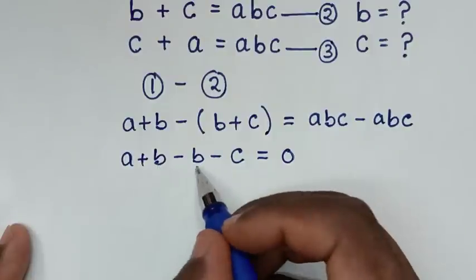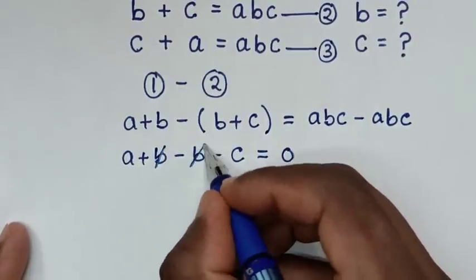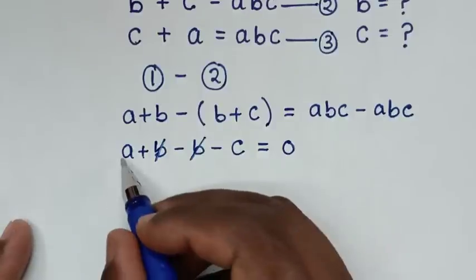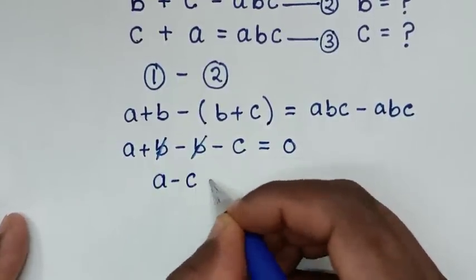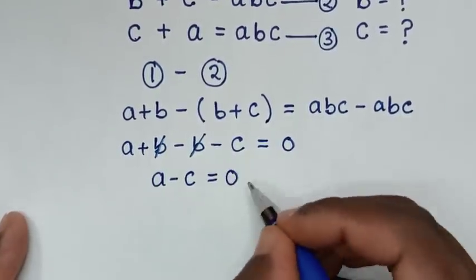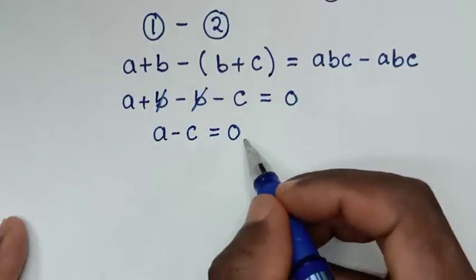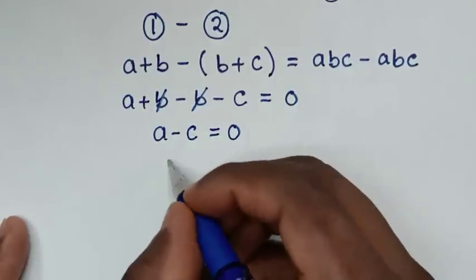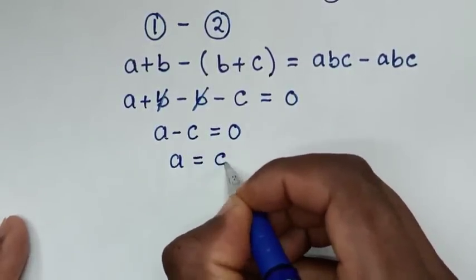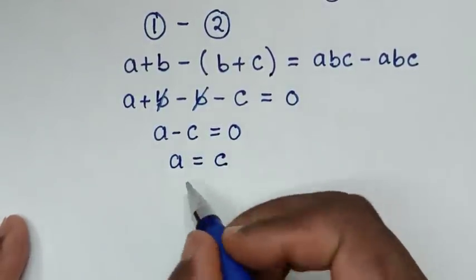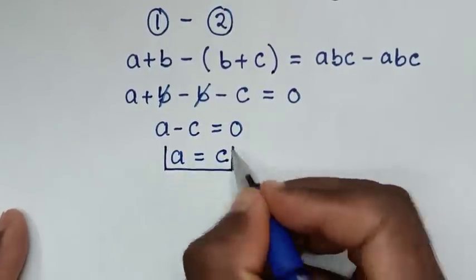Opening the bracket: A plus B minus B minus C equals ABC minus ABC, which is 0. B minus B cancels, leaving A minus C equals 0, so A is equal to C. We note that A equals C.